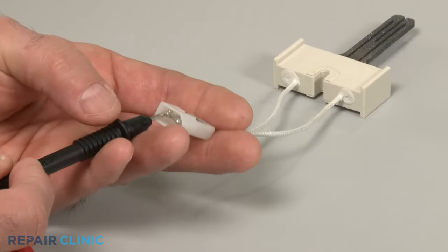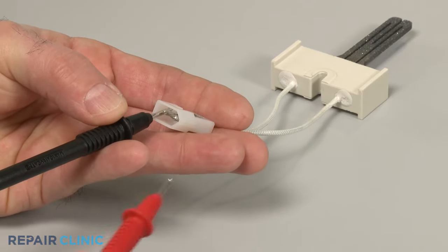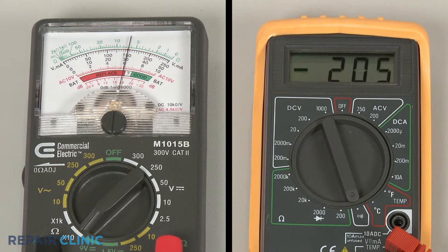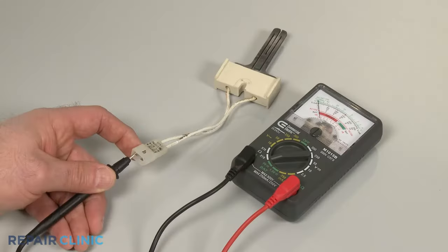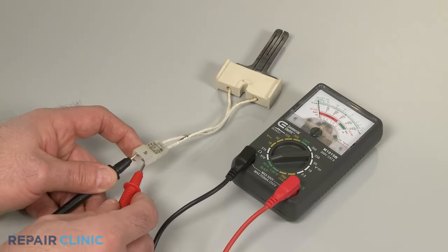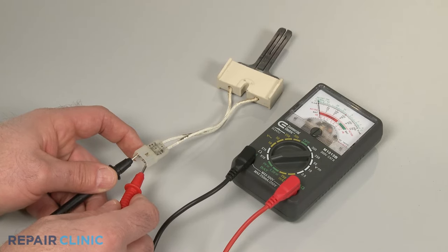You can also use a multimeter to test a glow bar style igniter or a smart valve igniter for continuity, a continuous electrical path present in the part. If the igniter tests negative for continuity, then the component will need to be replaced.